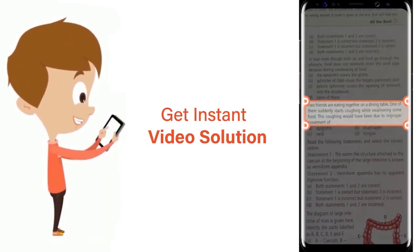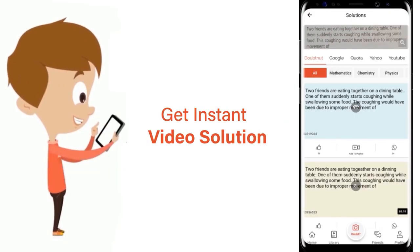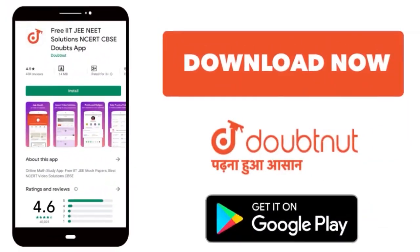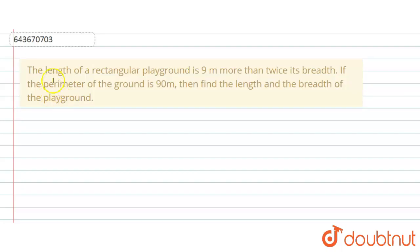The question says that the length of a rectangular playground is 9 meters more than twice its breadth. If the perimeter of the ground is 90 meters, then find the length and breadth of the playground. The given condition is that the length of the playground is 9 more than twice its breadth.